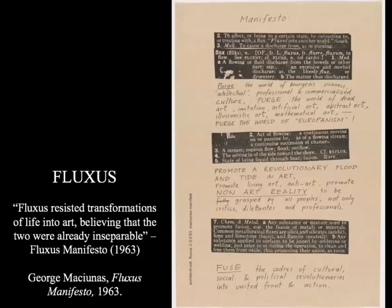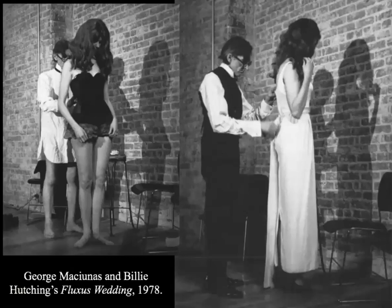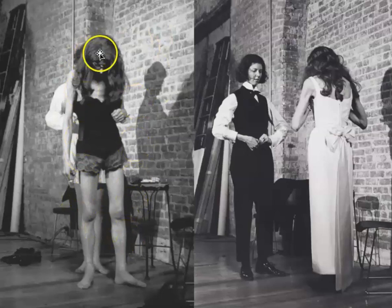The book talked about Fluxus as a type of subsection to performance art, which is a group that developed this manifesto with George Maciunas. Fluxus resisted transformations of life into art, believing that the two were already inseparable. They played a lot with constructions of gender and sexuality in their Fluxus wedding between George Maciunas and Billy Hutchins, where they wore traditional garb but then switched places and took over each other's dress. A wig was exchanged between the two figures.